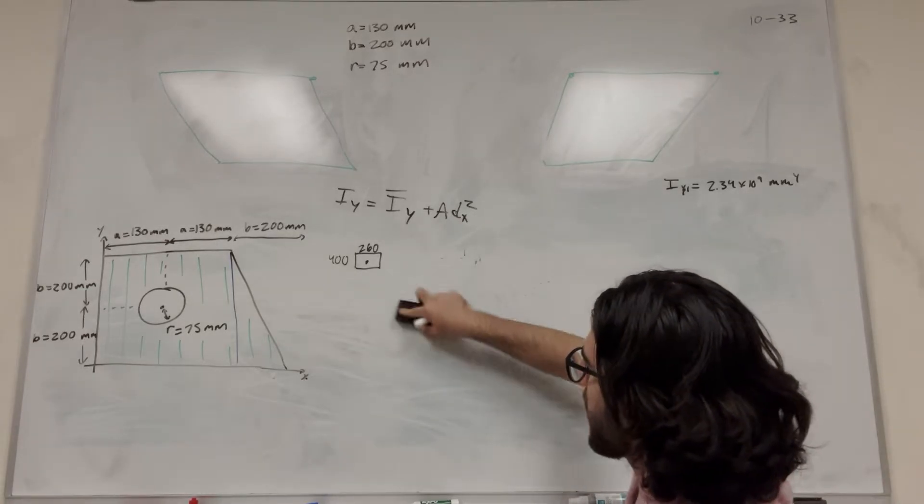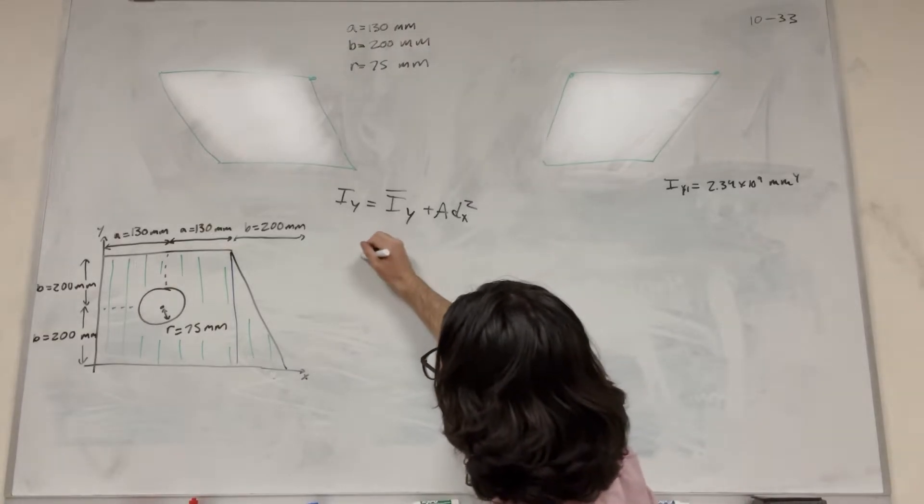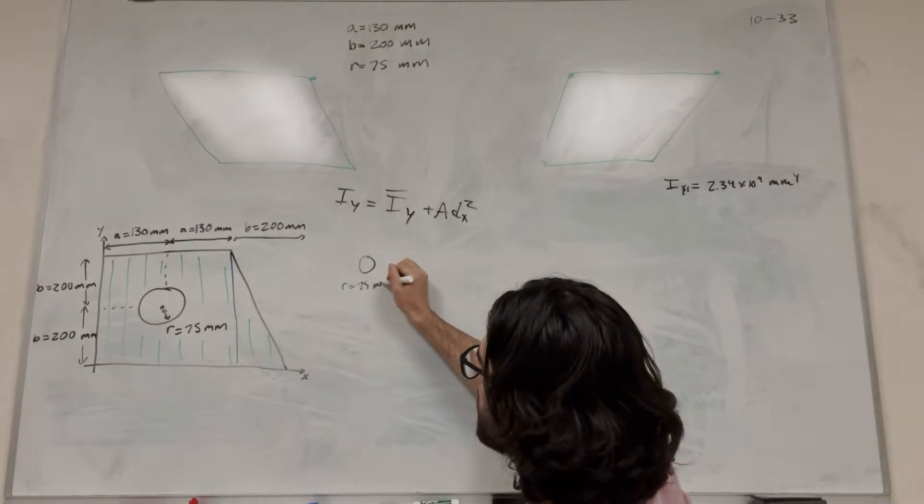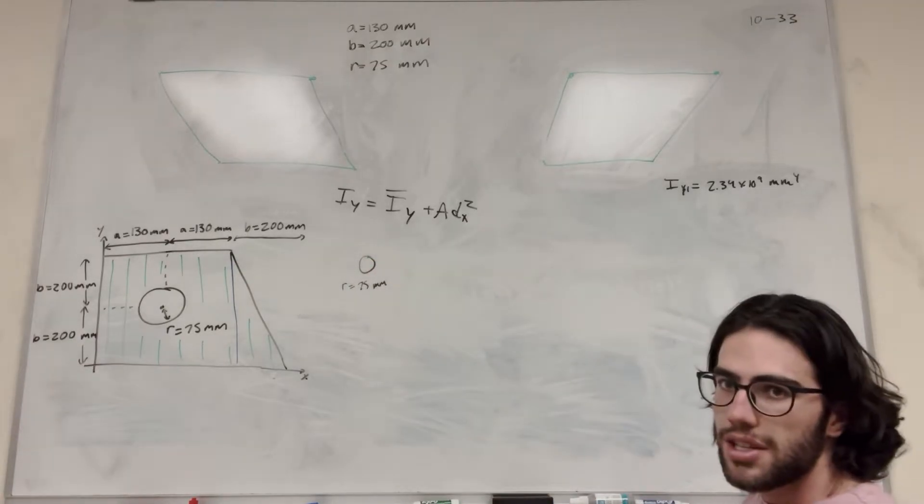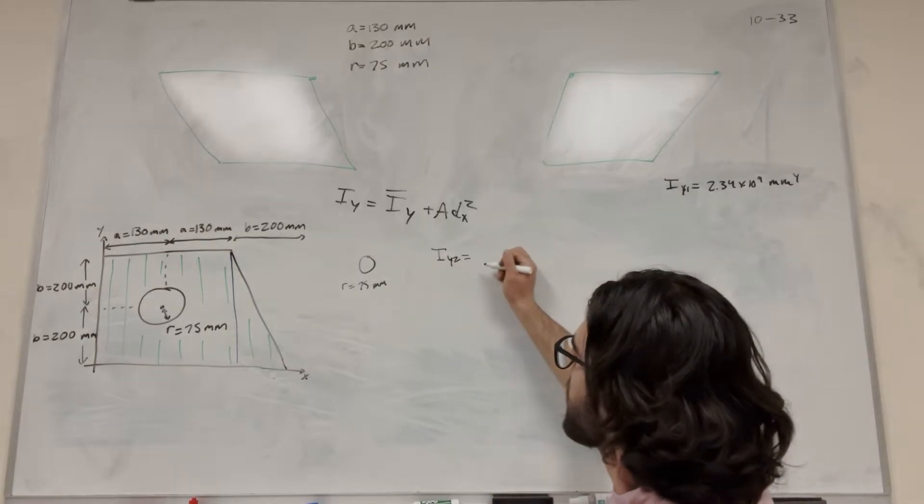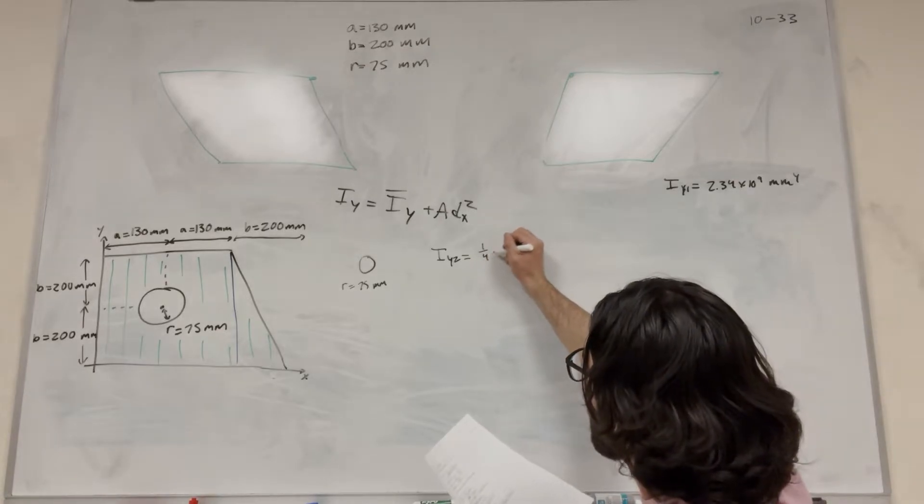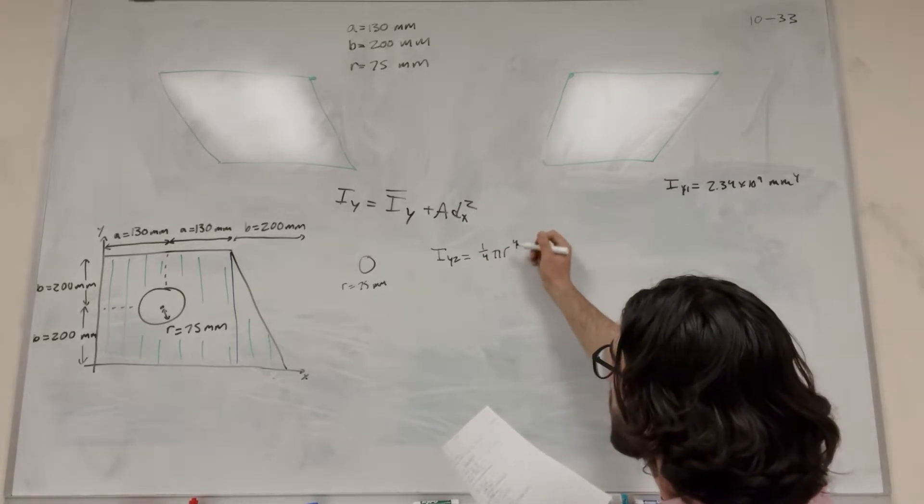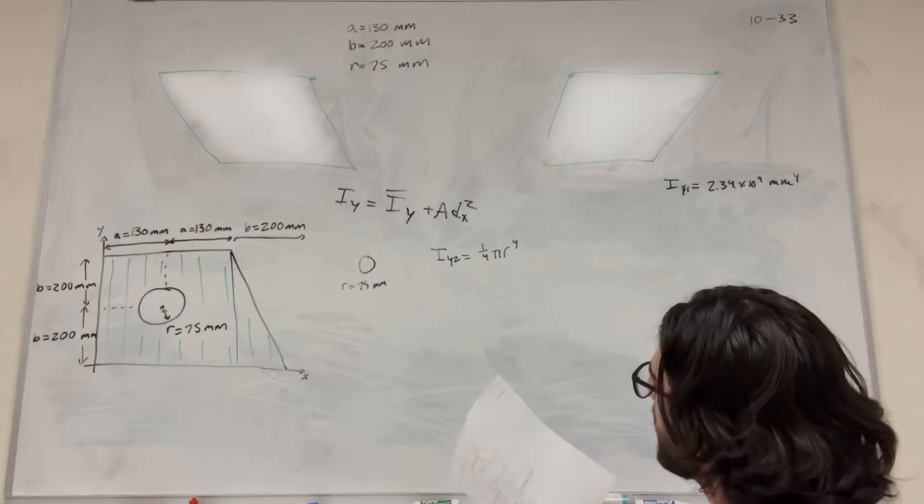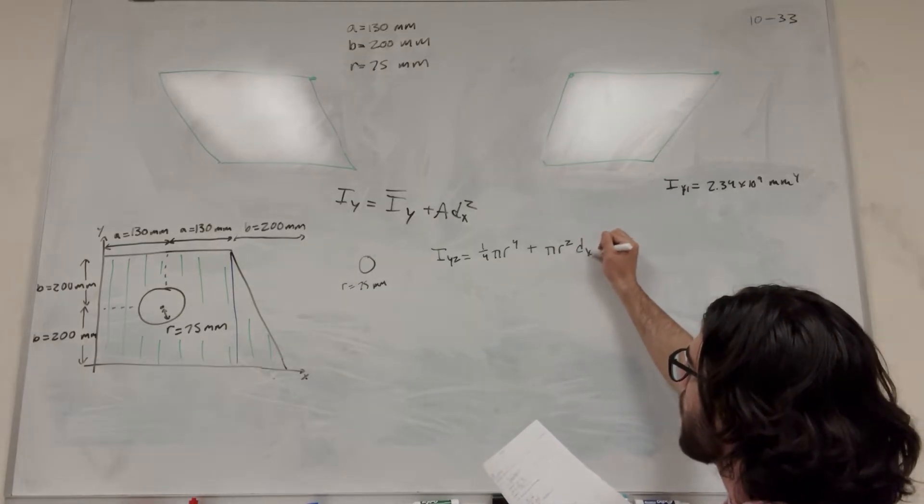Let's go to our next shape. Our next shape is the circle, and we know its radius is 75. I_y of 2 this time is equal to, when you're doing the circle, the equation for a circle is 1 over 4 pi radius to the 4th. This is i-bar here, 1 over 4 pi radius to the 4th. And then we're going to add area, so area of the circle is pi radius squared, and then distance in the x squared.